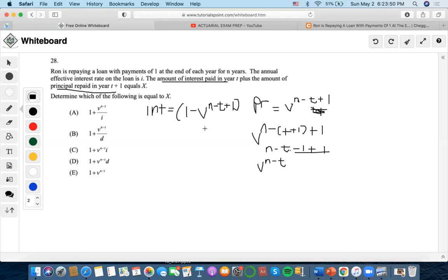Okay. Now it says that we have to add them because both of them added equals x, right, and we need to find what x equals to. So 1 minus v to the n minus t plus 1, right. Now I think it's our time to simplify to make it look like one of these answer choices. So I see that a common factor is v to the n minus t.